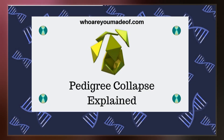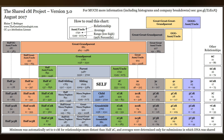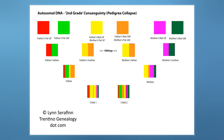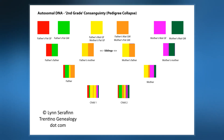Without pedigree collapse, a person's ancestor tree is a binary tree, formed by the person, the parents, the grandparents, great-grandparents, and so on. However, the number of individuals in such a tree grows exponentially and will eventually become impossibly high.